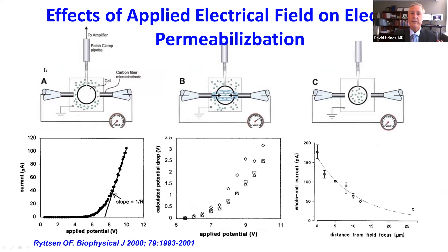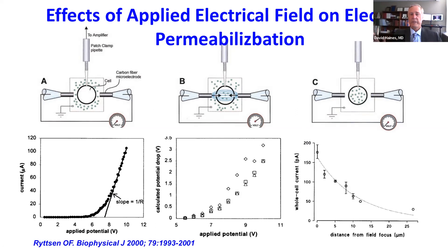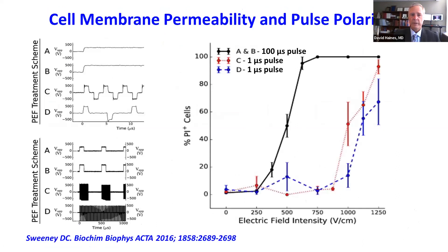Here's an experiment looking at the effect of an electrical field on an individual cell. In the first graph, as the applied potential is increased, at a certain inflection point there is breakdown of the dielectric membrane and current flow begins. There is a threshold effect dependent on amplitude of the field, and it's also dependent on distance from the source. The field falls off with increasing distance, and this field-over-distance is the key parameter seen in pulsed field ablation experiments.